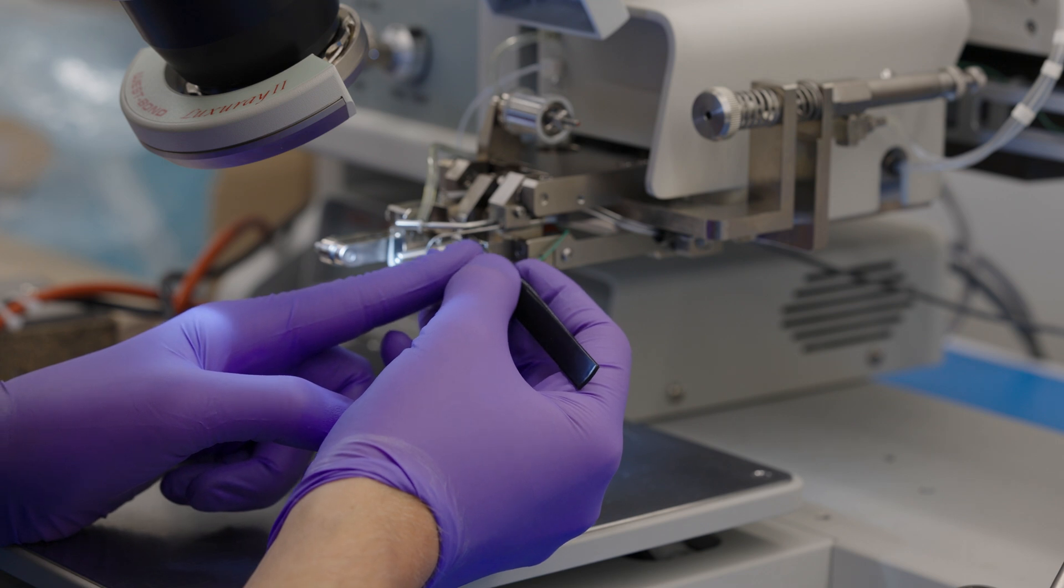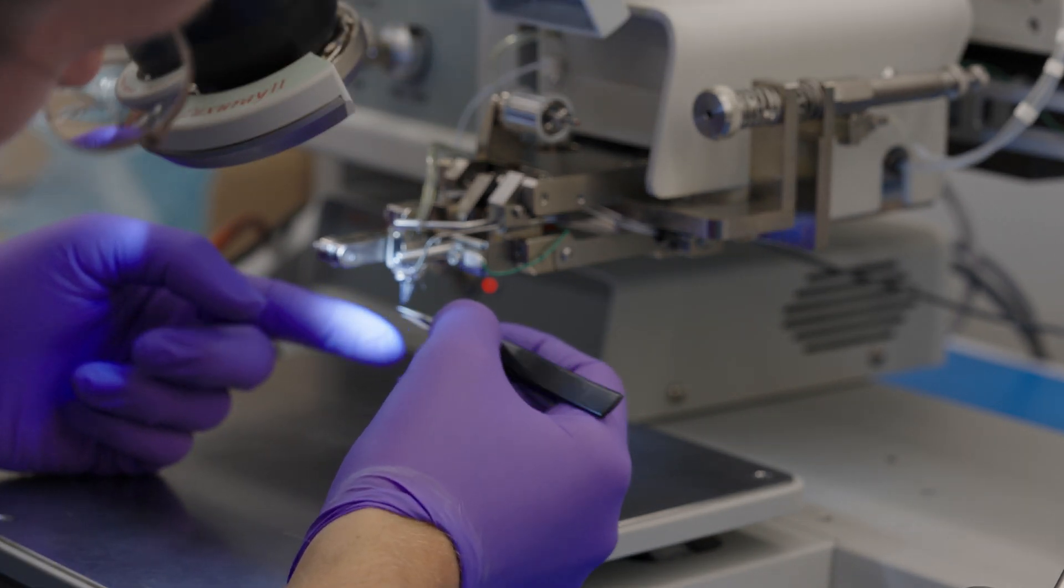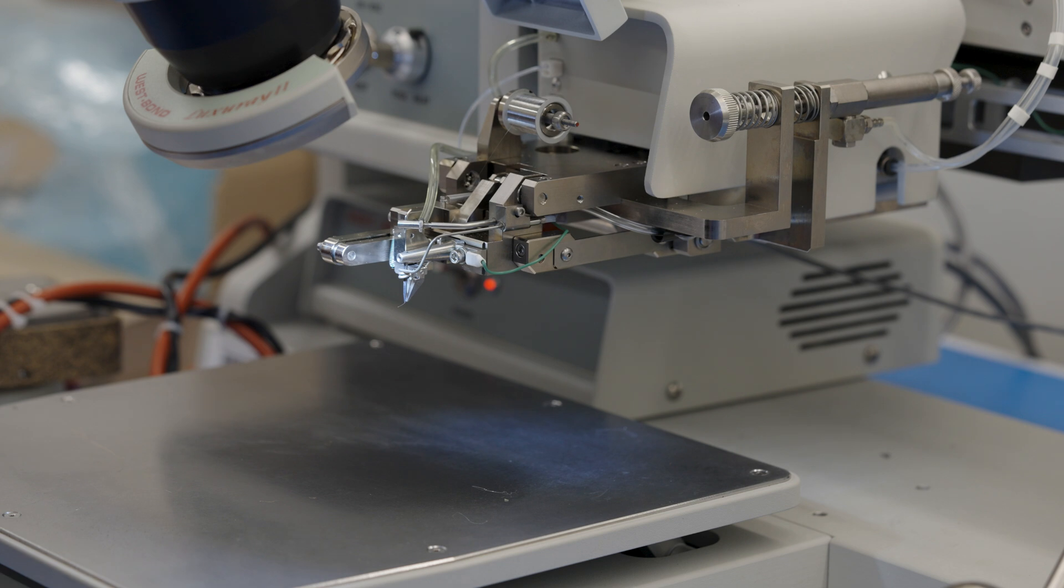So that's actually the easier part of threading this. The harder part is getting this wire through this tip here. So you want to make sure that it's firmly clamped when it's in there, otherwise it's not actually in the wire bonder.